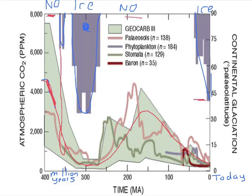And so what we see is a very nice relationship: high CO2, little or no ice; low CO2, lots of ice. Furthermore, we understand from processes that you can read about in our course and elsewhere, that it is the CO2 causing the changes in ice, and not primarily the ice causing the changes in the CO2.